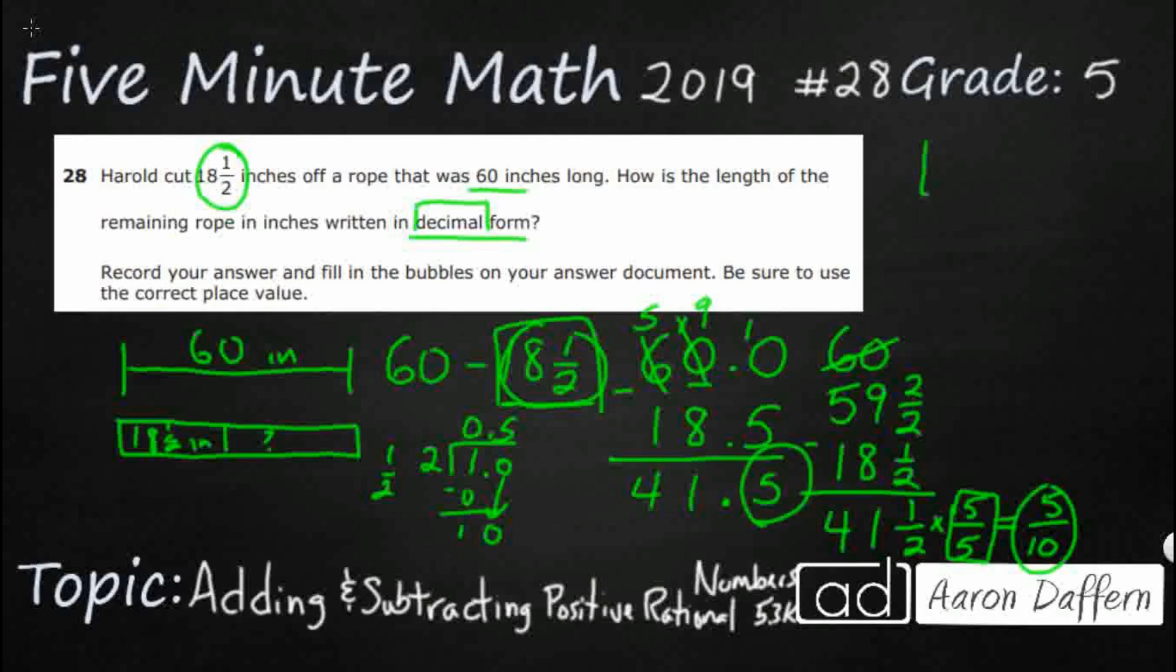So now all I need to do is I need to graph it here in my little free response. This is what you're going to look like. You're going to have two decimals, three whole numbers, and you're going to say 41.5.